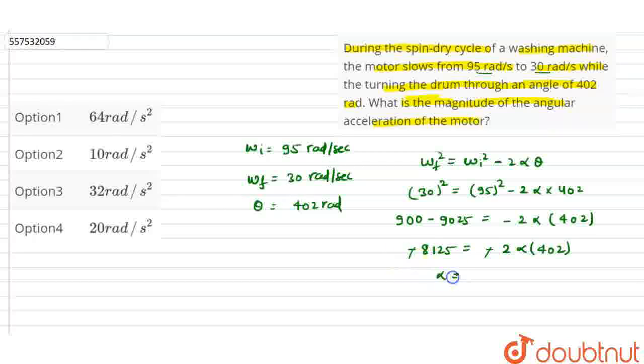After solving, the alpha value will equal 10 radian per second square. From the options, we can say option 2 is approximately equal.